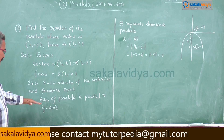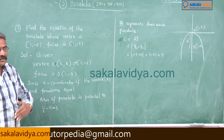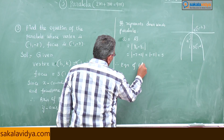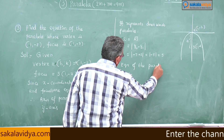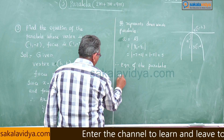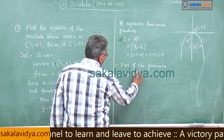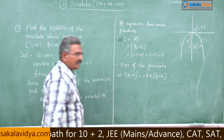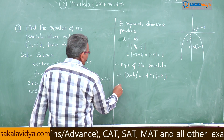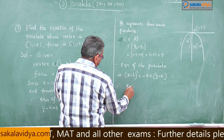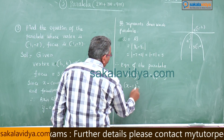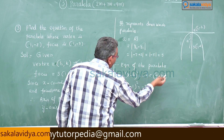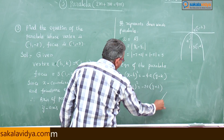Since the axis is parallel to the y-axis and the parabola opens downward, the equation is (x − h)² = −4a(y − k). Substituting h = 1, k = −2, and a = 5: (x − 1)² = −4 × 5 × (y − (−2)), which gives (x − 1)² = −20(y + 2). That is the answer.